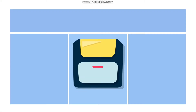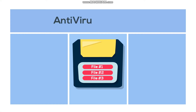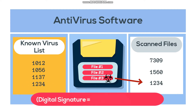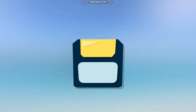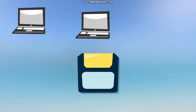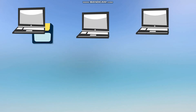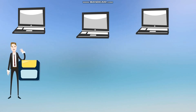The earliest forms of endpoint security products were known then as antivirus software. They scanned floppy disks for viruses by comparing a file's digital signature with a list of signatures of known viruses. This was before networks were widespread and people would take floppy disks from computer to computer using the programs and data stored on them.